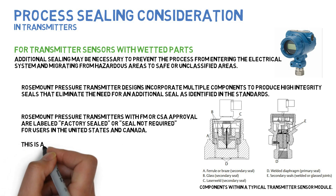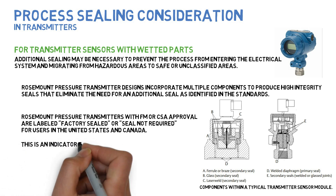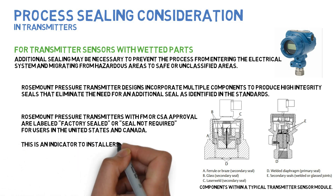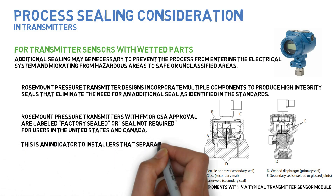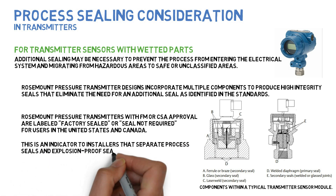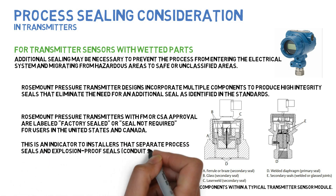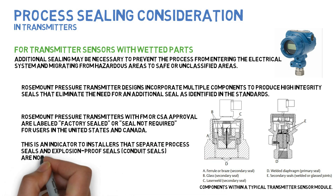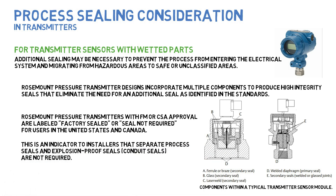Rosemount pressure transmitters with FM or CSA approval are labeled 'factory sealed' or 'seal not required' for users in the United States and Canada. This is an indicator to installers that separate process seals and explosion proof conduit seals are not required.